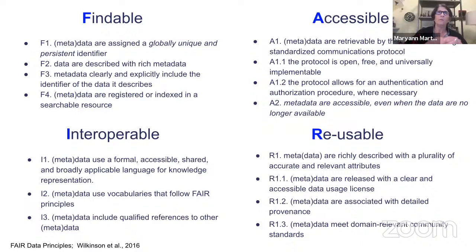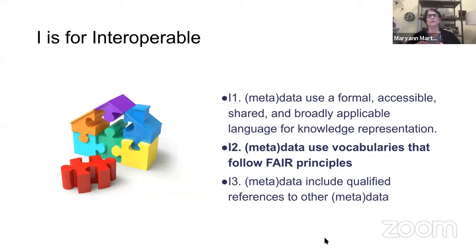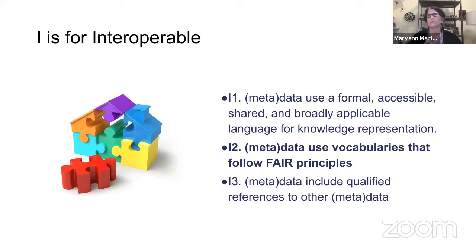I'm going to focus exclusively here on the interoperability part of FAIR. It asks for metadata and data to use a formal, accessible, shared, and broadly applicable language for knowledge representation. Those who know the people behind FAIR assume they're talking about something like RDF, the Resource Description Framework, but they constantly say that is not true — it is agnostic, but it shouldn't be custom or proprietary. It should use vocabularies that themselves follow the FAIR principles.